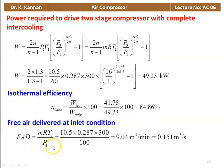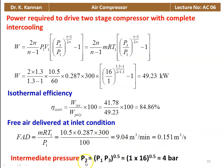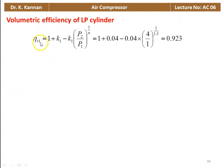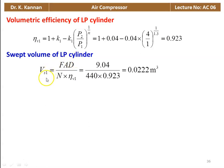Free air delivered: FAD equal to M·R·T1 divided by P1. So 10.5 into 0.287 into 300 divided by 100 equals 9.04 meter cube per minute, or 0.151 meter cube per second. Intermediate pressure for two-stage compressor: P2 equal to square root of (P1 into P3) equals square root of 16 equals 4 bar. Volumetric efficiency of LP cylinder: 1 plus K1 minus K1 into (P2 by P1) to the power 1 by n equals 1 plus 0.04 minus 0.04 into (4 by 1) to the power 1 by 1.3 equals 0.923. Stroke volume of LP cylinder: Vs1 equals 9.04 divided by 440 into 0.923 equals 0.022 meter cube.